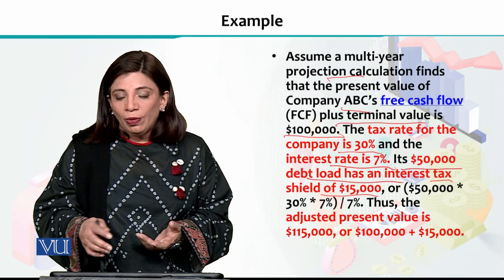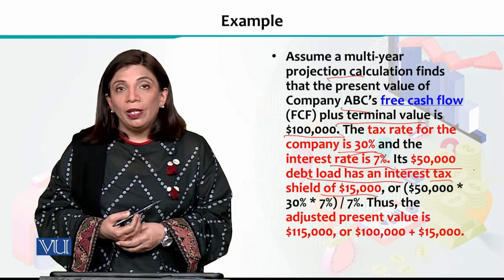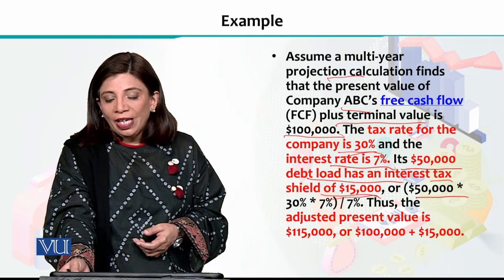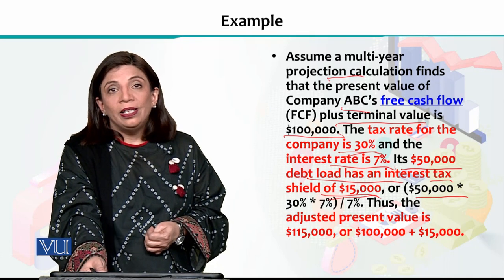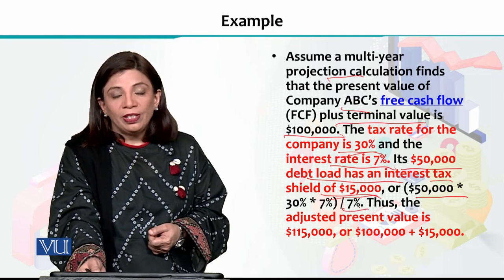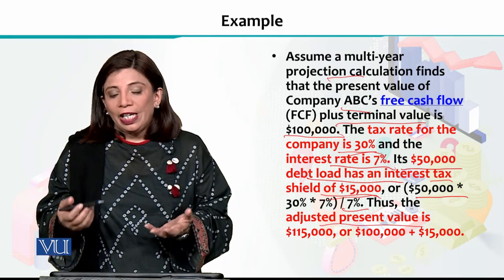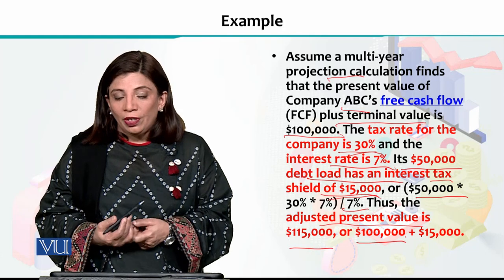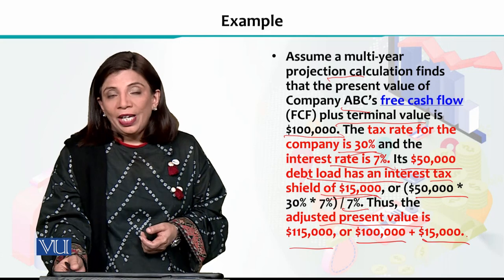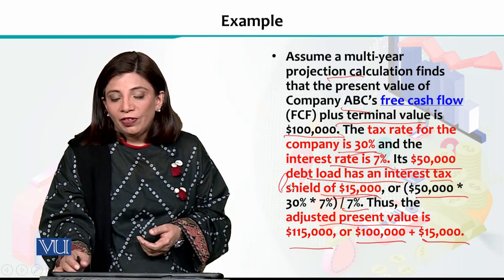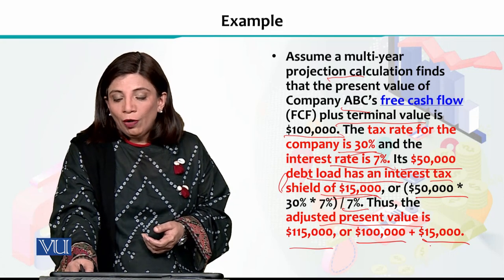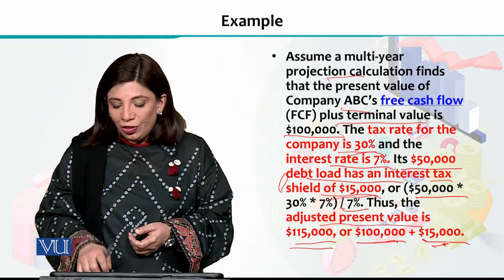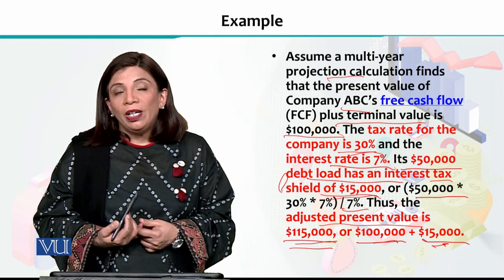So what do we do now? We take into account that the total tax rate is 30%, and we have the benefit of the interest tax shield of $15,000. By considering this information, we calculate: $50,000 multiplied by 30% and then multiplied by 7% (the interest rate), divided by 7%, which gives a value of $15,000. This means that from the $100,000 net present value, you add the interest tax shield of $15,000, giving you an adjusted present value of $115,000.